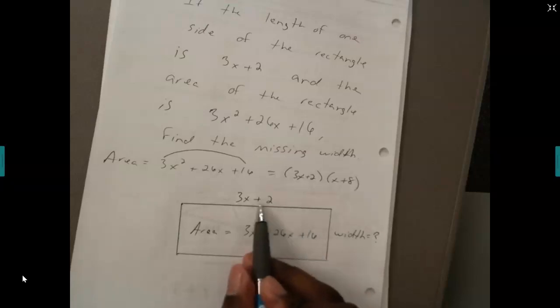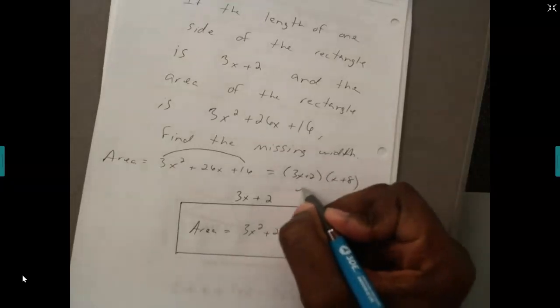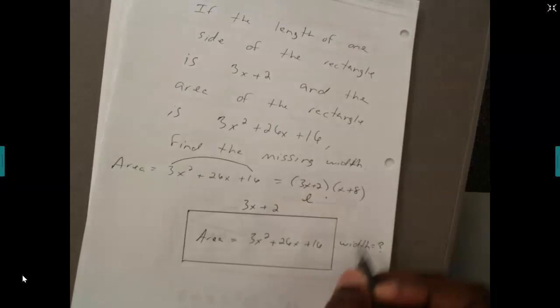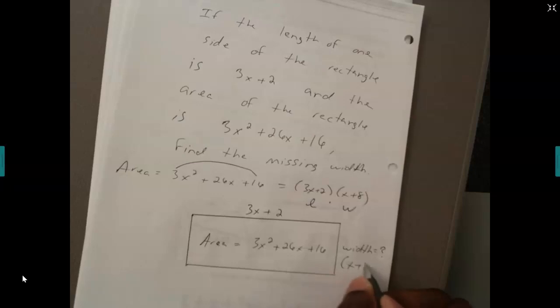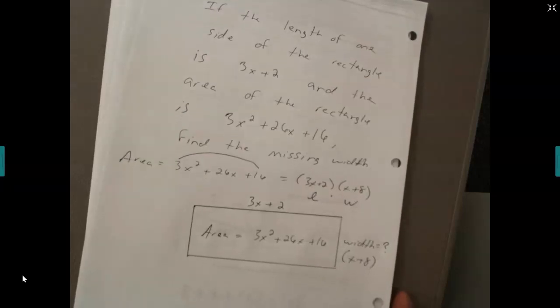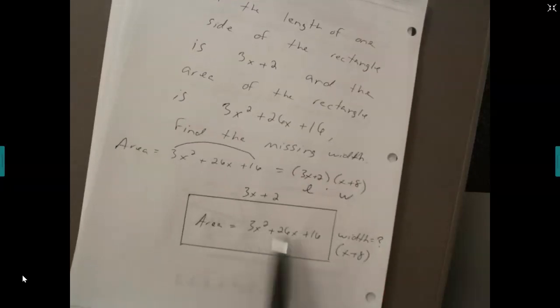I see that the length is 3x plus 2. This must be the length, so my width must be x plus 8. The unknown width must be x plus 8. That's how you solve a problem if I gave you the area and one of the sides.